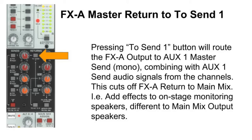Pressing down the To Send One button routes the FX-A output to the Auxiliary One master send. This is a mono signal because Auxiliary One is a mono channel, and it combines with the Auxiliary One send audio signals from each of the channels. Pressing To Send One also cuts off the FX-A output going to the main mix, so you can have separate effects going to the stage monitoring speakers, different from the main output speakers.